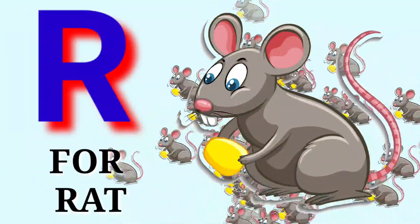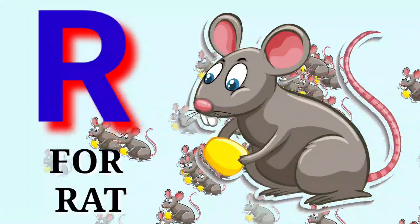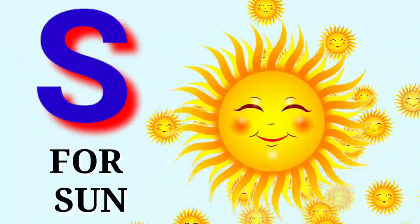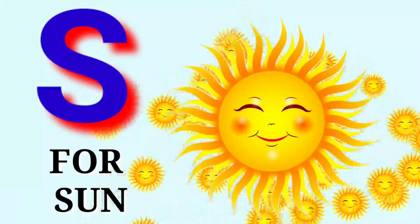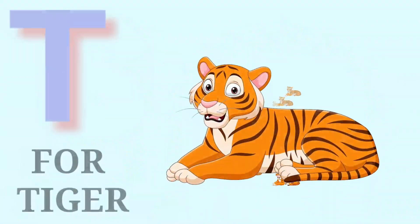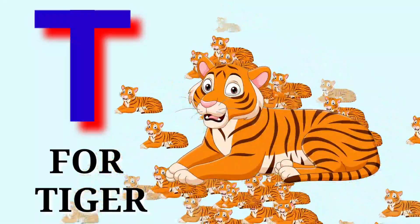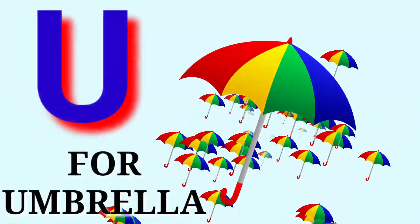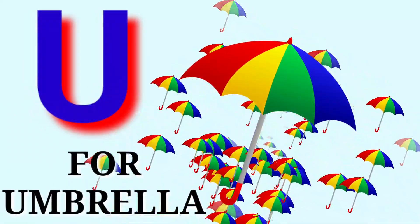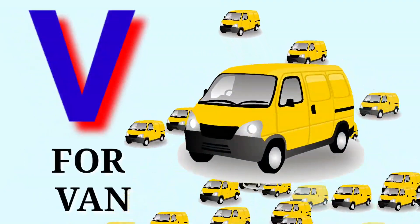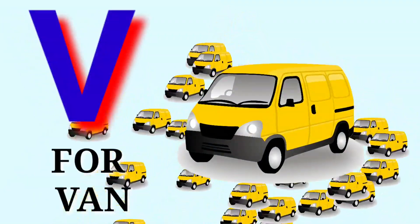R for rat, S for sun, T for tiger, U for umbrella, V for vine.